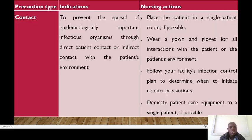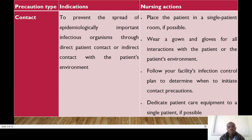Next, we have contact precautions, which are meant to prevent the spread of epidemiologically important infectious organisms through direct patient contact or indirect contact with the patient's environment. As an RN, you need to place this patient in a single patient room if possible.